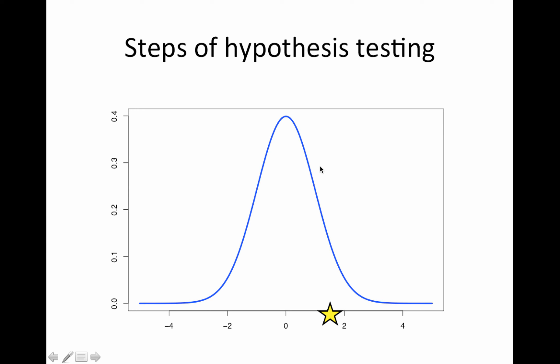Given the null is true means we're working with this blue distribution, the null distribution. More extreme: to figure what more extreme means you have to look at your alternative distribution, which is typically one-sided for imaging analysis, so in this case it's going to be greater. It's the area under the null to the right of our observed statistic. This is our p value and we typically compare this to 0.05.